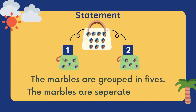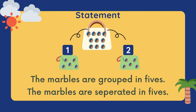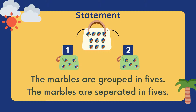The first statement is: we can say the marbles are grouped in 5s, or we can also say the marbles are separated in 5s. I'm going to explain in Bahasa: guli tersebut telah dikumpulkan kepada 5-5. Dalam kes ini, 5-5 untuk 2 kumpulan. Setiap kumpulan mempunyai 5 guli.